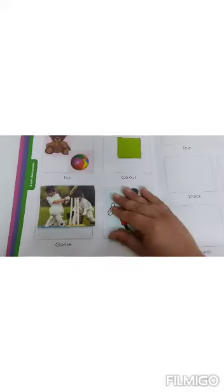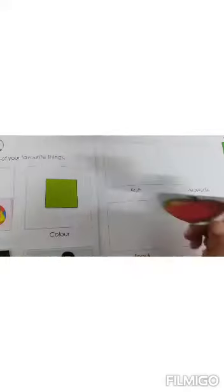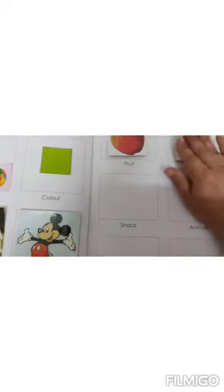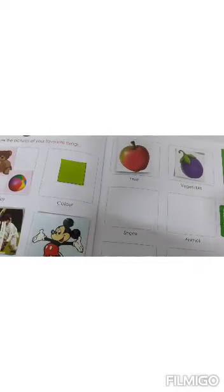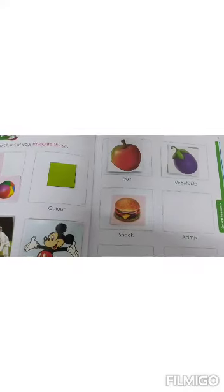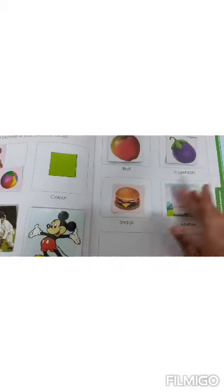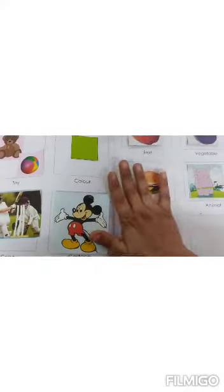You will apply glue at the back side of each picture and then you will stick. Now come to next page, favorite fruit. My favorite fruit is apple. And the next one is favorite vegetable. My favorite vegetable is brinjal. So I will paste the picture of brinjal over here. And the next is snack. I like to eat burger. So I will stick this picture. Next is animal. My favorite animal is elephant. See, now I have stick this picture. Next is flower. My favorite flower is lotus. So I will stick this picture.